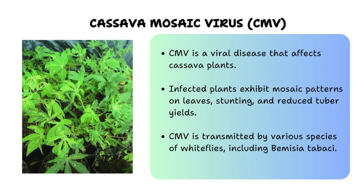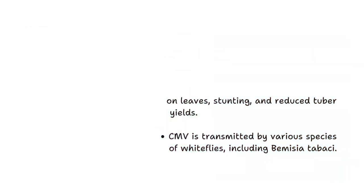Another virus transmitted by whiteflies is Cassava Mosaic Virus, also abbreviated as CMV. CMV is a destructive pathogen that affects cassava plants, which is a crucial staple crop for millions of people in tropical regions. CMV causes characteristic symptoms such as mosaic patterns on leaves, leaf distortion, stunted growth and reduced root yield. The virus can spread rapidly, leading to significant yield losses and threatening food security in affected regions.